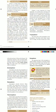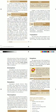Thermosphere exists above the mesosphere and extends about 600 kilometers. The composition of gas in the lower thermosphere is more or less uniform, hence it is called the homosphere. The upper portion of the thermosphere has uneven composition of gases, hence it is referred to as the heterosphere. The temperature increases with increasing height in this layer.